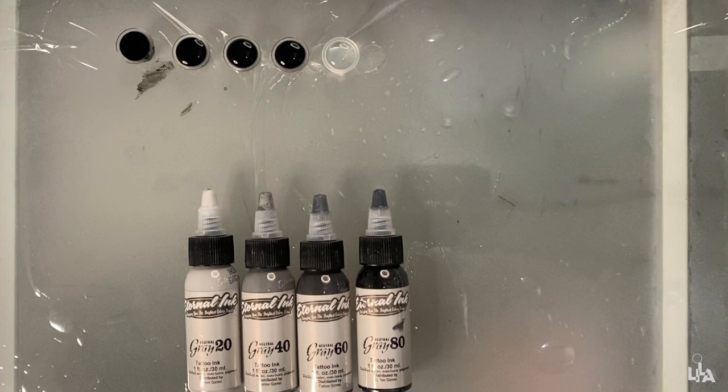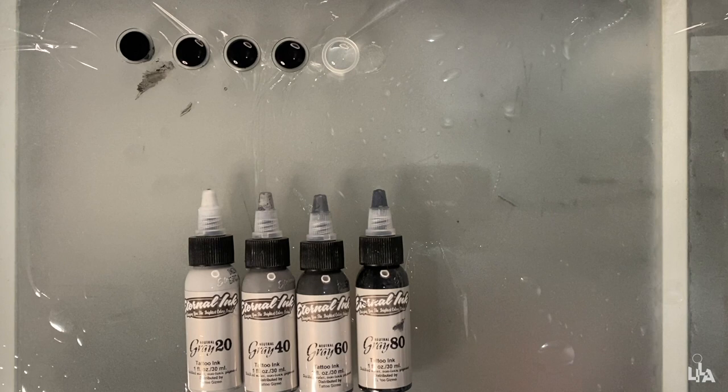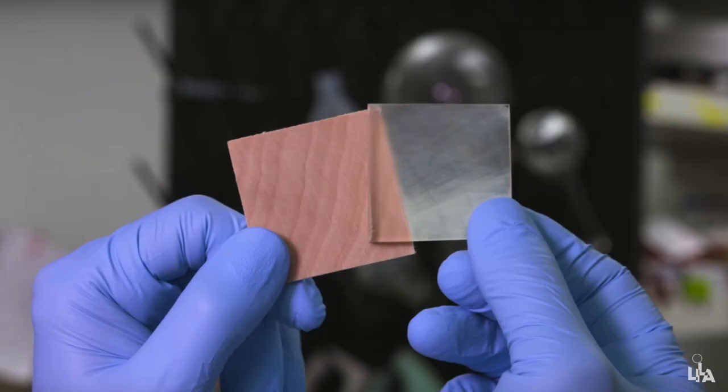Now the difference between the neutral grays and the gray wash is this: gray wash is transparent and the neutral grays are opaque in nature. So if I have to simply explain you, imagine the gray wash represents glass and the neutral grays represent wood.